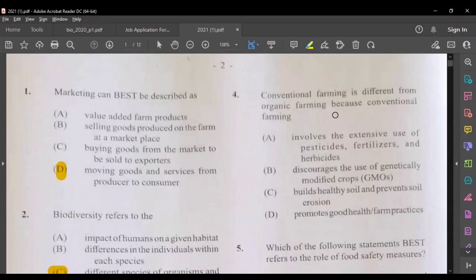Question number four: Conventional farming is different from organic farming because conventional farming involves excessive use of pesticide, fertilizers and herbicides. That seemed like a possible answer. Let's look at the others: discards the use of GMO, kills healthy soil and prevent soil erosion, promote good health and farm practices. So the best answer for number four would be A, involves extensive use of pesticides, fertilizers and herbicides.